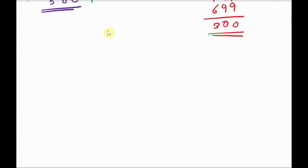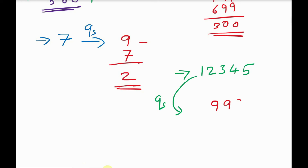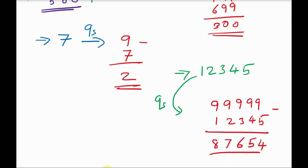We will take a single digit number. Find the 9's complement of 7 — subtract from 9: 9 minus 7 is 2, so 2 is the 9's complement of 7. Another example: find the 9's complement of 1, 2, 3, 4, 5. Since it is a 5-digit number, take 5 nines and subtract: 99999 minus 12345 gives 8, 7, 6, 5, 4. So 87654 is the 9's complement of 12345.